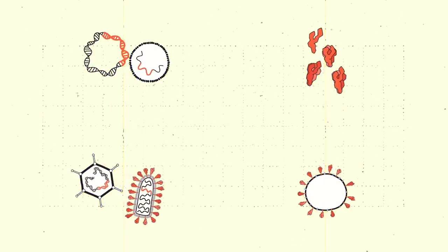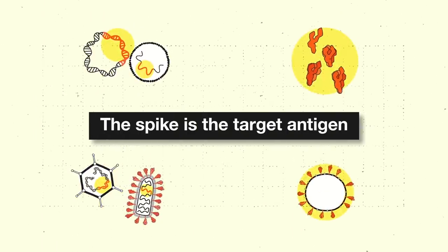The scientific way to put this is that the spike is the target antigen in these vaccines. Where the next-generation vaccine platforms differ from those more conventional vaccines is how the immune system is exposed to the spike or the antigen.